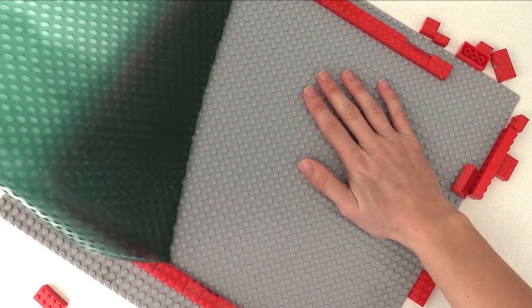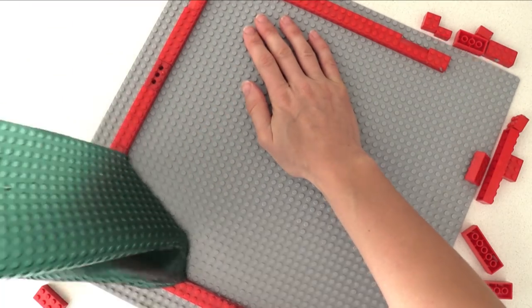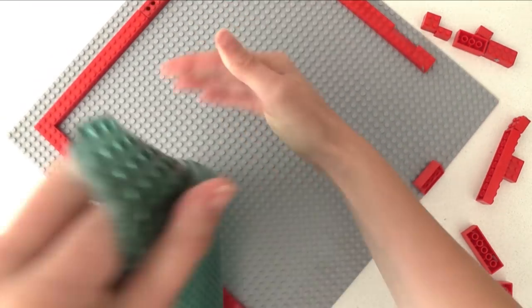By now your molding gel should be set. Remove the bricks from the edge and then just peel it off the baseboard and now you have a nice lego texture mat.